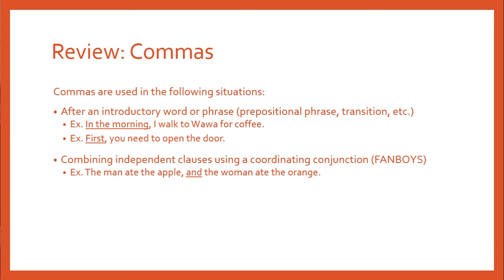Next is our FANBOYS. When you combine an independent clause — a complete sentence with a subject and a verb that expresses a complete idea — and you combine two of those using a coordinating conjunction, one of the FANBOYS, you need to use a comma before the conjunction. In our example: 'The man ate the apple, and the woman ate the orange.' 'The man ate the apple' and 'the woman ate the orange' are both independent clauses, so when combined into one sentence you need a comma and a coordinating conjunction.